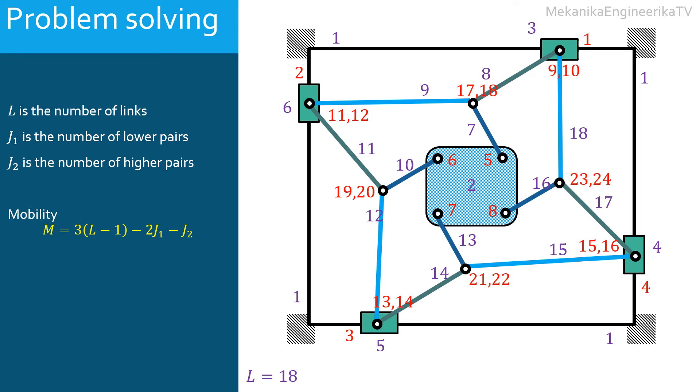In all we have 4 translating joints, 4 simple rotating joints, and 8 rotating joints of second order. Thus, J1 is equal to 24.